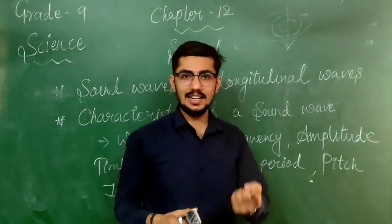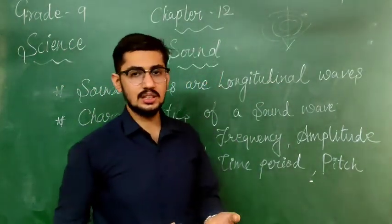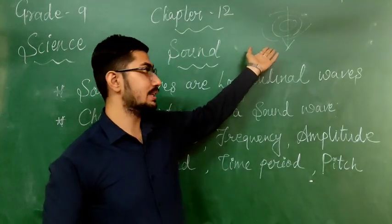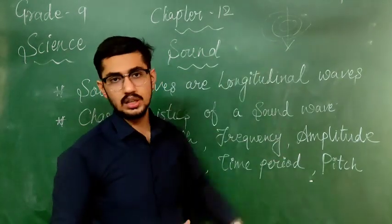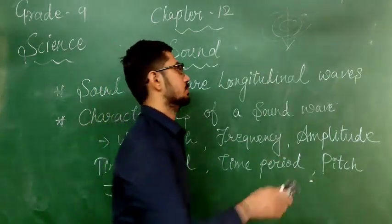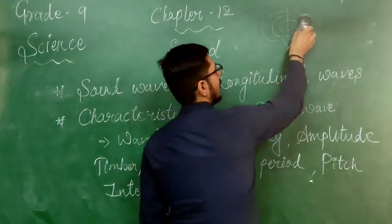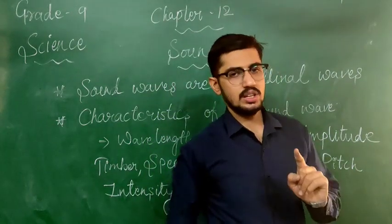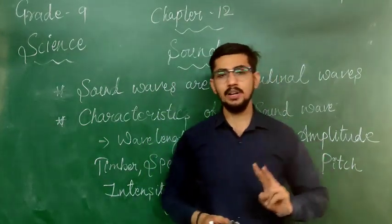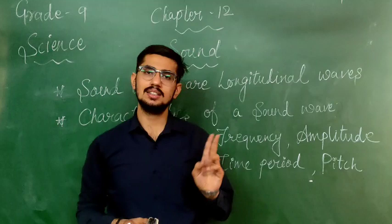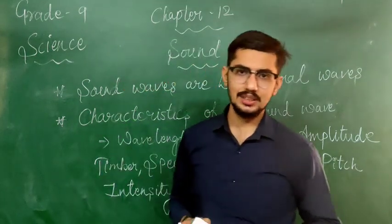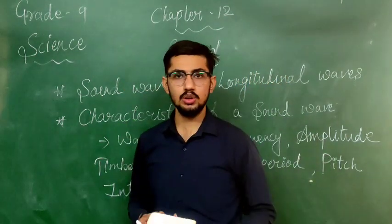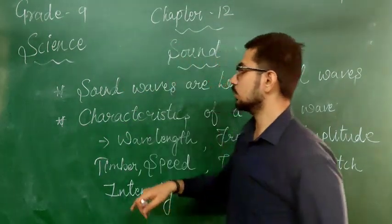Light is also a kind of transverse wave — that is another example. So the key point to remember is: if the particle movement is parallel to the wave direction, it is a longitudinal wave; if the particle movement is perpendicular to the wave direction, it is a transverse wave. That is the only important thing to keep in mind for this topic.